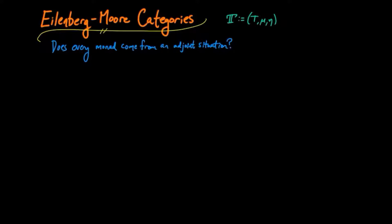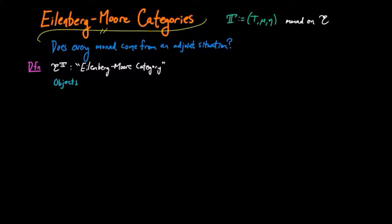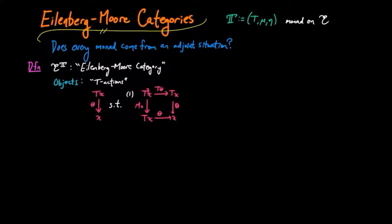If we fix a monad t on a category e, we can define the Eilenberg-Moore category e^t to have objects of t-actions, where an action is given by an object x in e and a morphism from tx to x. This morphism theta has to satisfy two axioms, the first being that it is invariant under multiplication, meaning that we can take t-theta followed by theta, or the multiplication followed by theta, and these two morphisms are equal, meaning that the square commutes.